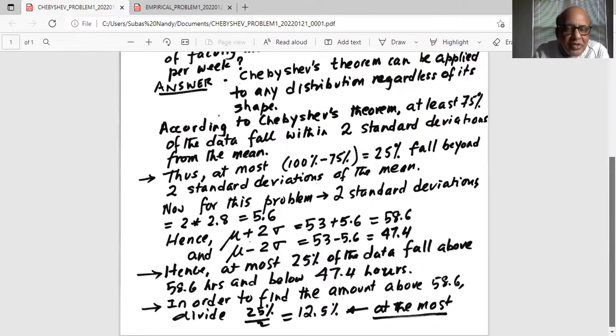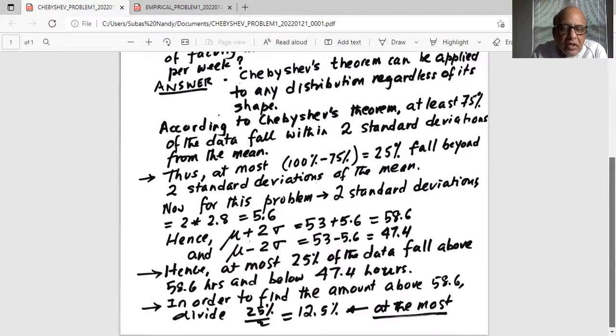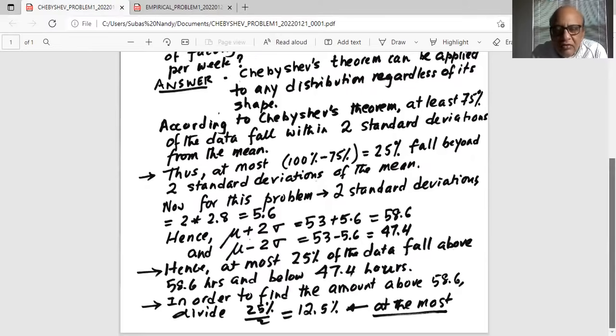We are interested only in the percentage above 58.6. So, we divide that 25 into two equal parts and we get at most 25% divided by 2, which is 12.5% of the data, at the most, will fall above 58.6. Why 12.5? Because we divide the number 25% into two equal parts.